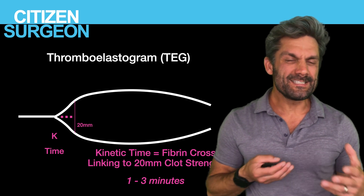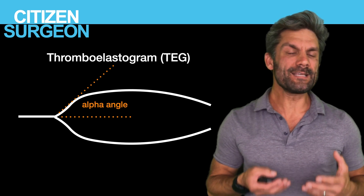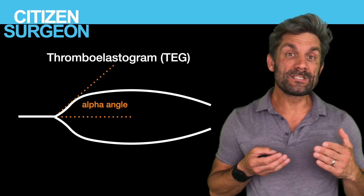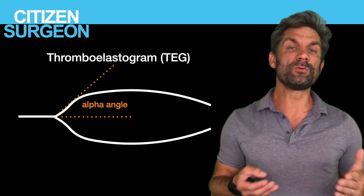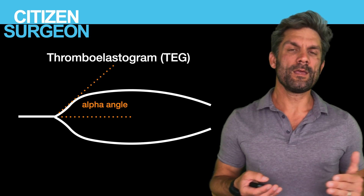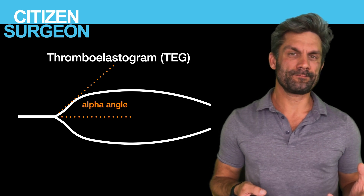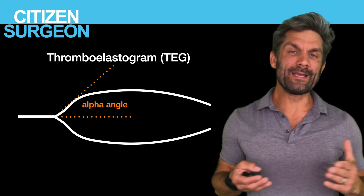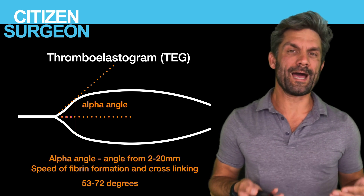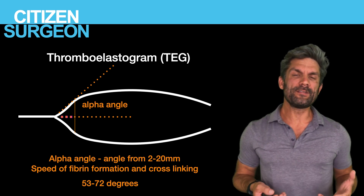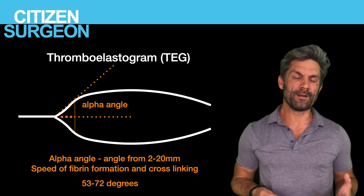A sister parameter is the alpha angle, shown in orange. Unlike the K time, it's not a time — it's a measurement of the slope of the waveform. Taking a point at 20 millimeters and creating the angle between that and the flat line at the R time gives the alpha angle, which represents the rate of clot development. As the angle increases, clot forms faster; as it decreases, clot takes more time to form. A normal alpha angle is between 53 and 72 degrees, also related to fibrinogen and platelet number.